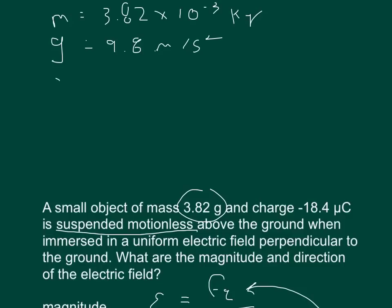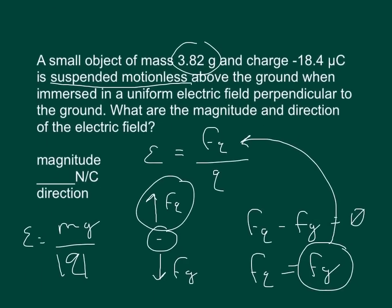The charge Q is going to be equal to—we're just going to say the absolute value of Q is equal to 18.4 times 10 to the negative sixth coulombs. So if you plug those numbers into our equation right here...